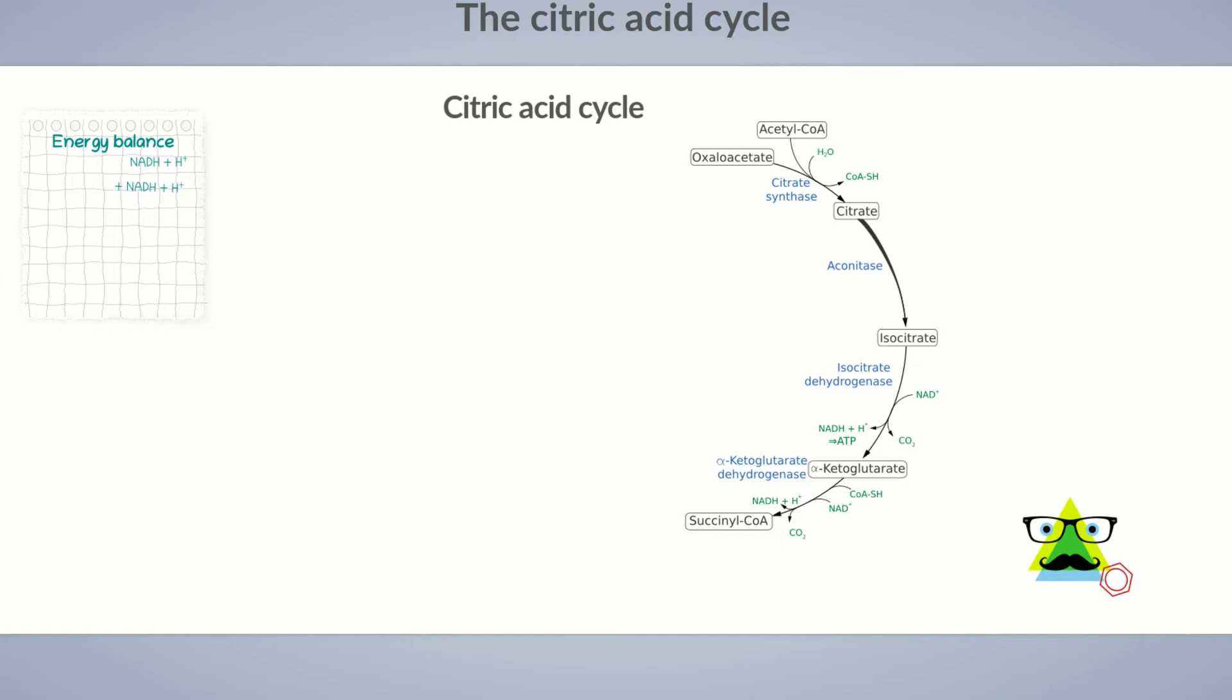By the way, the carbon atoms of both carbon dioxide molecules originate from the oxaloacetate part of the molecule, not from the acetyl part. This means that the carbon atoms of any new acetyl group pass through the citric acid cycle more than once before leaving as carbon dioxide. To keep things simple, acetyl-CoA is overall still considered to be split into two carbon dioxide molecules.